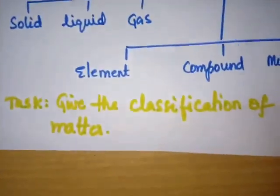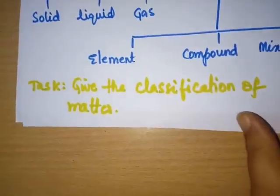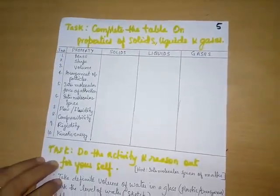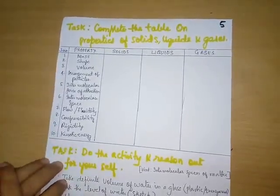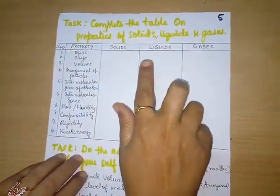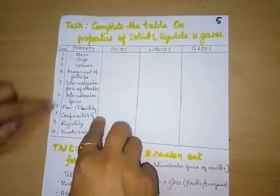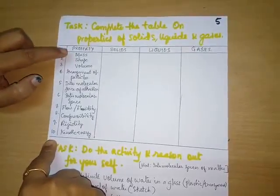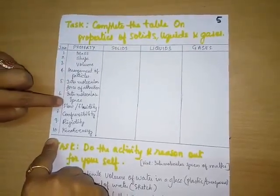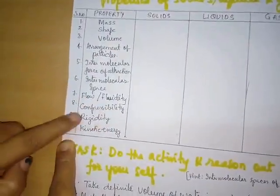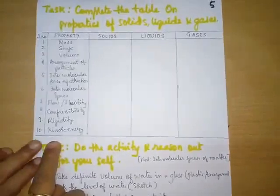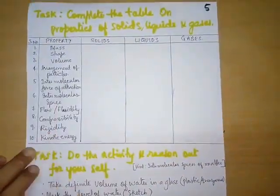Can you take this task? Give the classification of matter. We have learnt a lot about properties of matter in our previous classes, from classes third to sixth. I want you to complete this table on the properties of solids, liquids, and gases. I have listed 10 properties: mass, shape, volume, arrangement of particles, intermolecular force of attraction, intermolecular space, flow or fluidity, compressibility, rigidity, and kinetic energy.